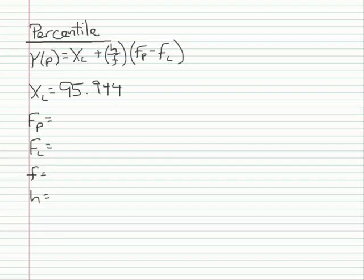Next, I need to find f sub p, which is the frequency of scores below the percentile point. You can compute this as the sample size n times p divided by 100. That's going to be 30 times p, which is 50 because I'm interested in the 50th percentile, divided by 100, which equals 15.